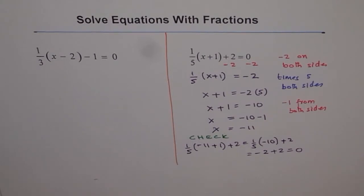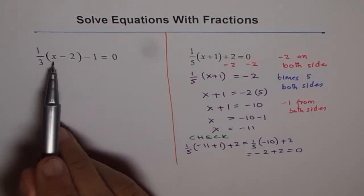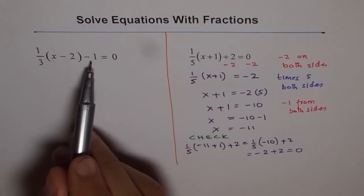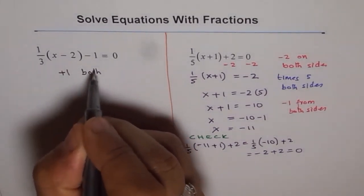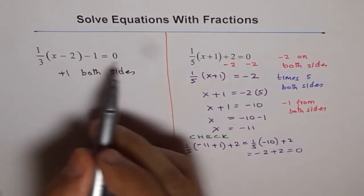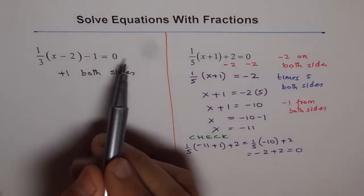Now, we did the right side. The left side is for you to do, but let's go over the steps. Now, when you see equation like this and you want this x, first thing is, what should you do? Plus 1 both sides. That is the first step. So if you do plus 1 both sides, you get 1 over 3 times (x minus 2) equals to 1.